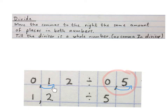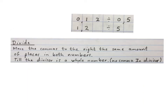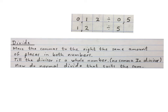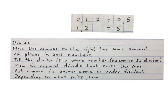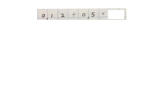But we must do the same on the dividend, so now your sum will look like this: 1.2 divided by 5. Then we do a normal divide that suits the sum and put the comma in the answer above or under the dividend. Right, let's do the sum together: 0.12 divided by 0.5.